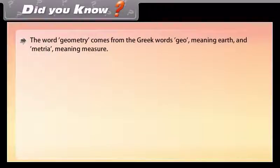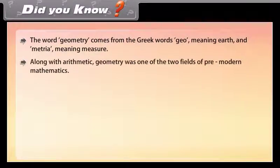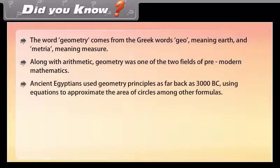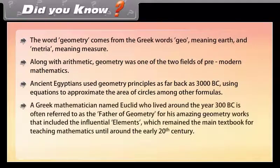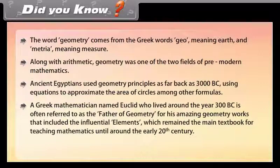Did you know? The word geometry comes from the Greek words 'geo' meaning earth and 'metria' meaning measure. Along with arithmetic, geometry was one of the two fields of pre-modern mathematics. Ancient Egyptians used geometry principles as far back as 3000 BC, using equations to approximate the area of circles among other formulas. The Greek mathematician Euclid, who lived around 300 BC, is often referred to as the father of geometry for his influential work 'Elements,' which remained the main mathematics textbook until the early 20th century.